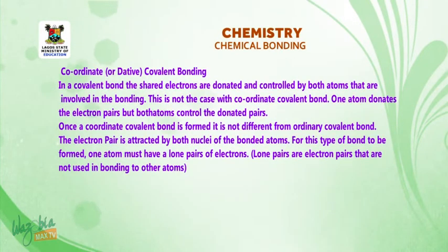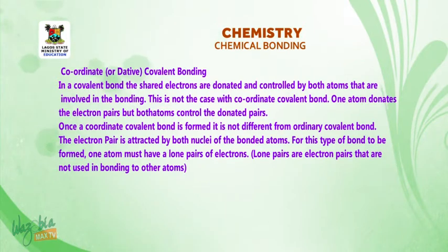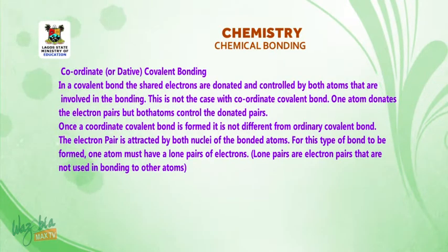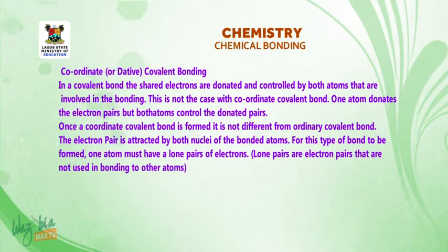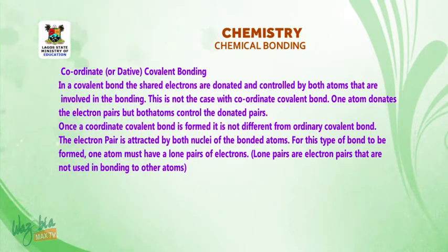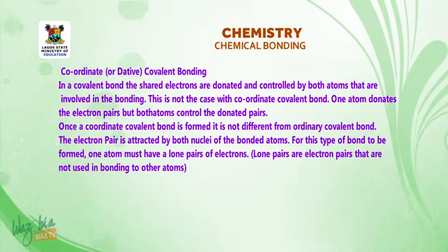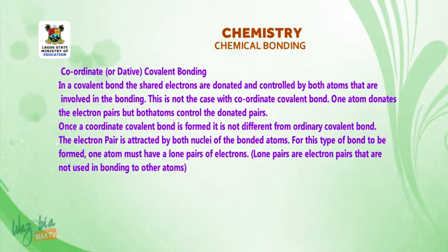Welcome back. Now we move on to coordinate covalent bonding, also known as dative covalent bonding. In a covalent bond, the shared electrons are donated and controlled by both atoms involved in the bonding. This is not the case with coordinate covalent bonds — one atom donates the electron pairs, but both atoms control the donated pairs. Once a coordinate covalent bond is formed, it is not different from an ordinary covalent bond.